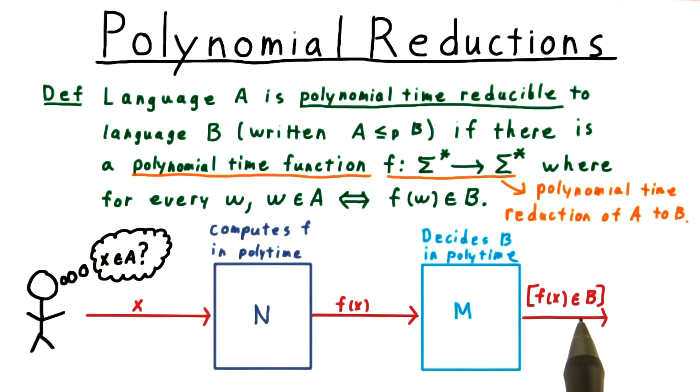M will tell me if f(x) is in B, but by definition of a reduction, this also tells me whether x is in A, which is exactly what I wanted to know.